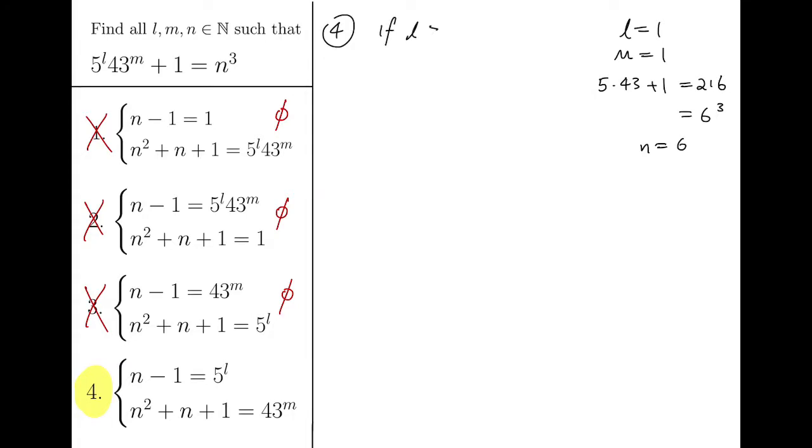So, let's assume that if L is at least 2, then looking at the structure of the system we have is that N minus 1 is the power of 5 and the index we now know is at least 2. So, we can say that N minus 1 is a multiple of 25. So, we say it's congruent to 0 mod 25 and so N is congruent to 1 mod 25.